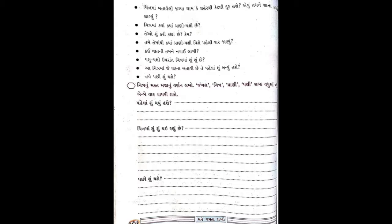ચાર નંબરનો ક્વેશ્ચન. ચિત્ર આ૫ 6 % 6 % છ%ૉ%. બ%ધ% ૫%ક%3%ૉ% 3%ૉ%$ . ૧%- % ઉ%/r%ૉ%$, % ૬%ૉ%% %. %ૉ%$%/%ૉ%. % %-%. બ%ધ% ૫%ક%3% 3ĕ%ĕ 3ĕ%ĕ%% %. %-% % %. %-% % %. %-% % %. %-% % %. %-% % %. %-% % %. %-% % %. %-% % %.